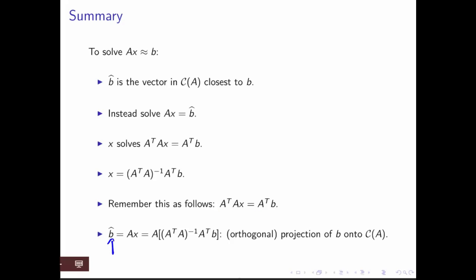The vector in the column space of A that is then closest to the right-hand side vector B that we started with is given by A times this best solution, which is known as the orthogonal projection of B onto the column space of A.